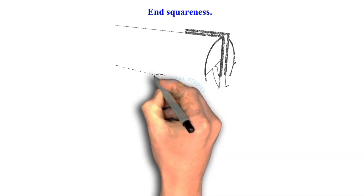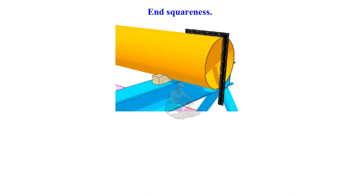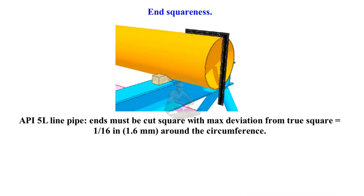End squareness — API 5L line pipe: ends must be cut square, with a maximum deviation from true square equal to 1/16 inch (1.6 millimetres) around the circumference.